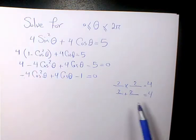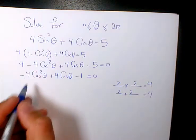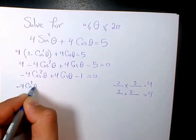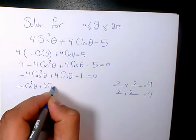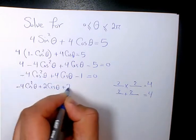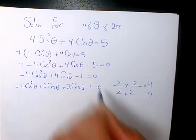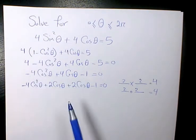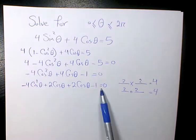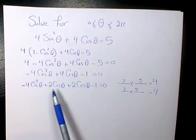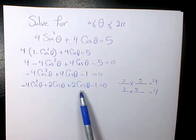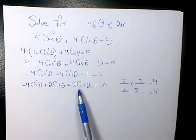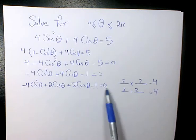Those two numbers both make 4 when multiplied. So I rearrange the equation as negative 4 cosine squared theta plus 2 cosine theta plus 2 cosine theta minus 1 equals 0. Instead of the trinomial, I've written 4 terms by splitting 4 cosine theta into 2 cosine theta and 2 cosine theta.